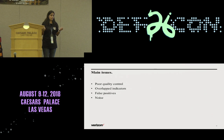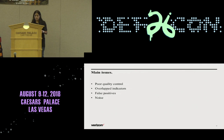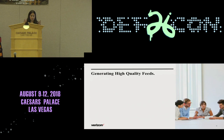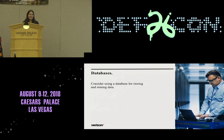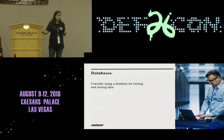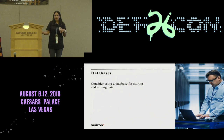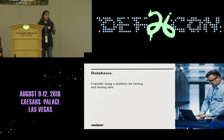Most companies would rather not use threat intelligence feeds than use them, because it's just generating noise and you don't know where the source is coming from, or if you can trust it. Now, generating high-quality feeds is possible, believe me. The first step you need to take is having a database. Don't take everything on the fly from different sources — make it into JSON or CSV format and export it to whoever you want to. Have everything in your database so you can apply quality control and have control on the indicators you're ingesting.